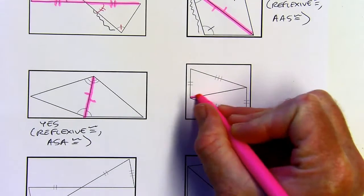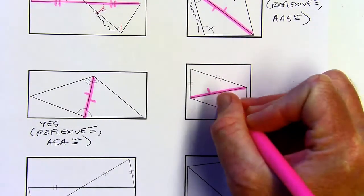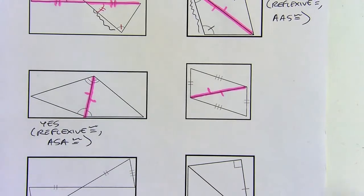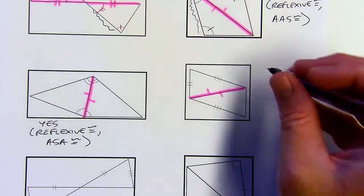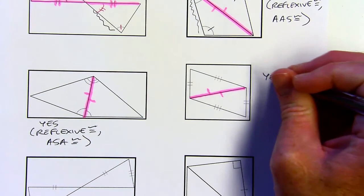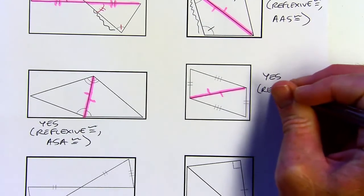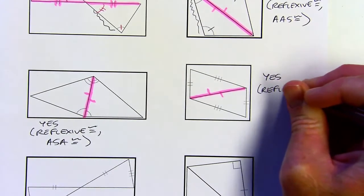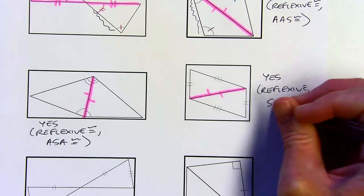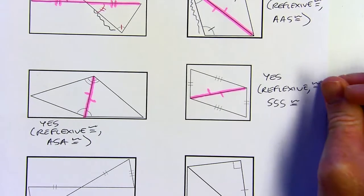Reflexive once more. These get pretty repetitive because you see the same kind of thing happening over and over again. So then we've got SSS — three pairs of congruent sides. So yes, reflexive and SSS.